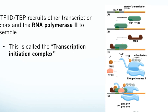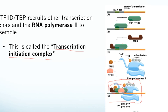Once TF2D and TBP are bound to the TATA box promoter region, they recruit other transcription factors — including TF2B, TF2E, and TF2H — as well as the RNA polymerase itself, all to the promoter region as a huge complex. This is called the transcription initiation complex. Without the binding and local distortion of DNA by TF2D, you wouldn't get recruitment of this transcription initiation complex.